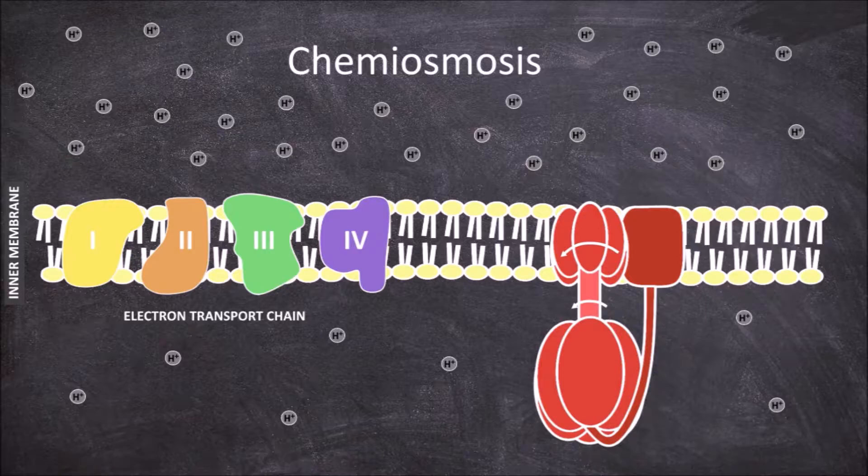The hydrogen protons that are in a higher concentration in the intermembrane space want to move down their concentration gradient into the lower concentrated area of the matrix. These hydrogen protons move through a channel in the stator of the ATP synthase.